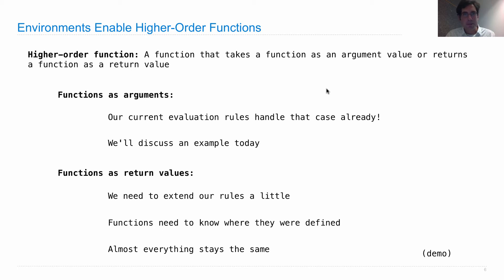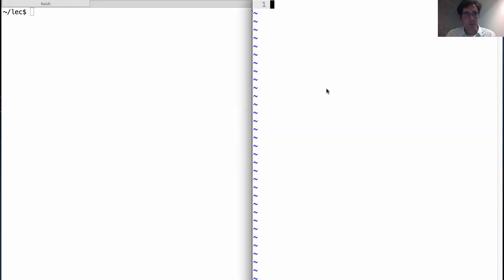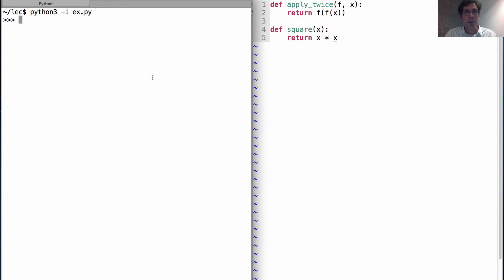Let's start with some examples. So I'm going to define a function called apply_twice which takes another function and an argument x. And it returns the result of applying f to f of x. So that's why it applies it twice. It applies f to x and then it applies f to whatever the result of f of x is. Let's also add in our handy square function, x times x. And we'll start an interpreter where apply_twice and square are both loaded.